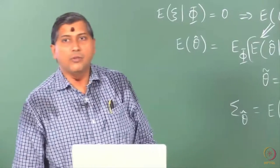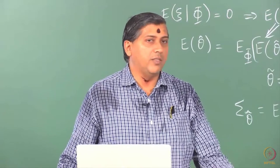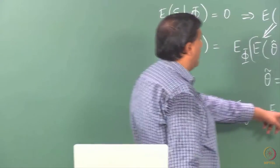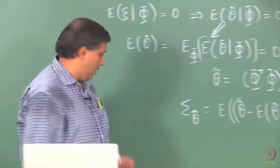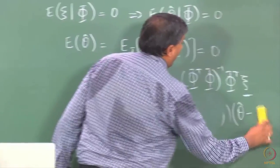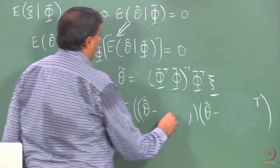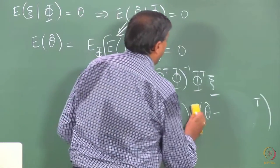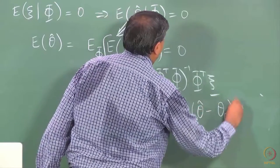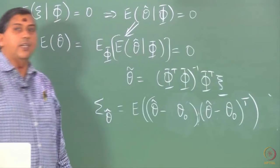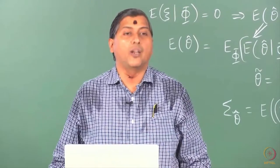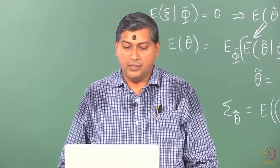We use this expression because theta hat is a p-by-1 vector. If theta hat were a scalar, we would simply say the expectation of (theta hat minus mu_theta_hat) squared. Now, assuming that theta hat is an unbiased estimator — which we have ensured by guaranteeing the whiteness of residuals — we can replace the expectations of theta hat with their respective true values. The starting point is always the definition of sigma theta hat.